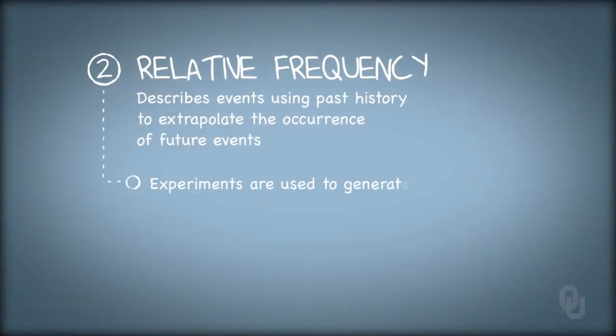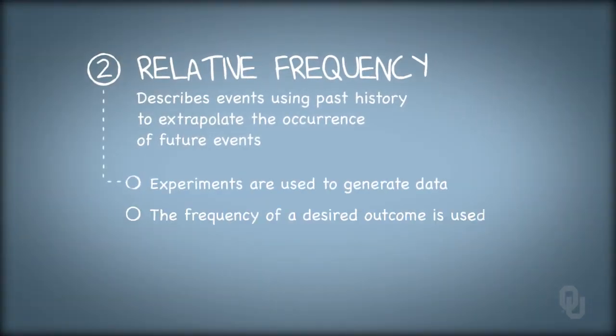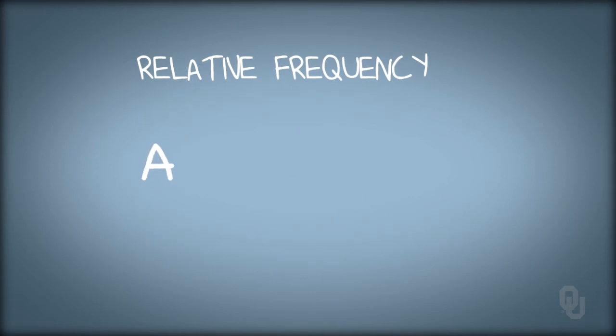Experiments are performed to generate data, then the frequency of a desired outcome is used to calculate the probability of that desired event happening again. When event A is best described with the relative frequency view, the probability of event A is calculated as the number of ways A has occurred in the past divided by the total number of outcomes that we've witnessed in the past.